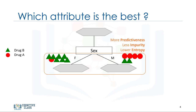We can say the sex attribute is more significant than cholesterol, or in other words, more predictive than the other attributes. Predictiveness is based on decrease in impurity of nodes. We're looking for the best feature to decrease the impurity of patients in the leaves after splitting them up based on that feature. So the sex feature is a good candidate because it almost found the pure patients.